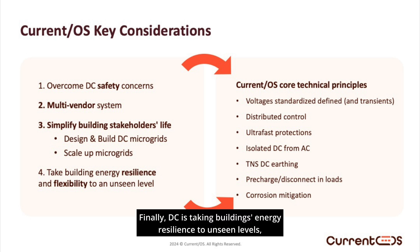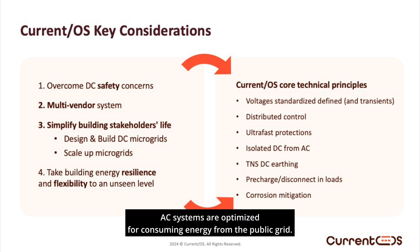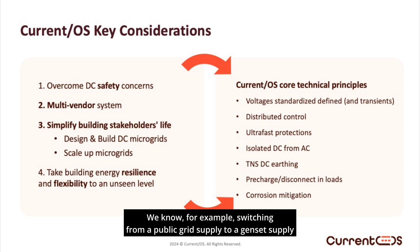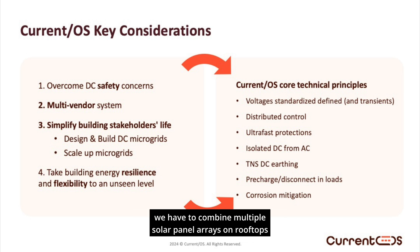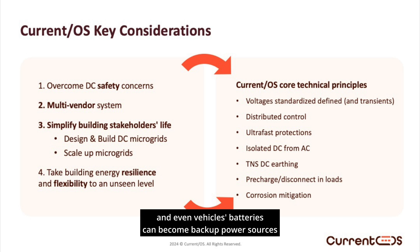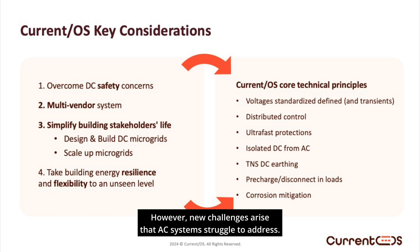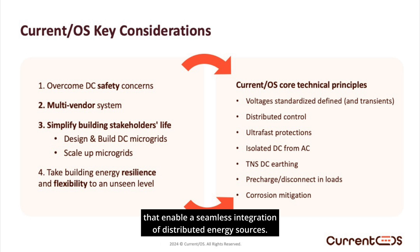Finally, DC is taking building energy resilience to unseen levels, solving the new challenges of distributed energy sources. AC systems are optimized for consuming energy from the public grid; however, they become complex when local energy sources are involved. For example, switching from a public grid supply to a genset supply requires specific transfer systems. When we develop local energy sources without limitation, we combine multiple solar panel arrays on rooftops and parking lots with distributed battery storage — even vehicle batteries can become backup power sources for a building. As local sources multiply, buildings gain in resilience and flexibility. However, new challenges arise that AC systems struggle to address. Current OS aims to resolve these issues with DC systems that enable seamless integration of distributed energy sources.